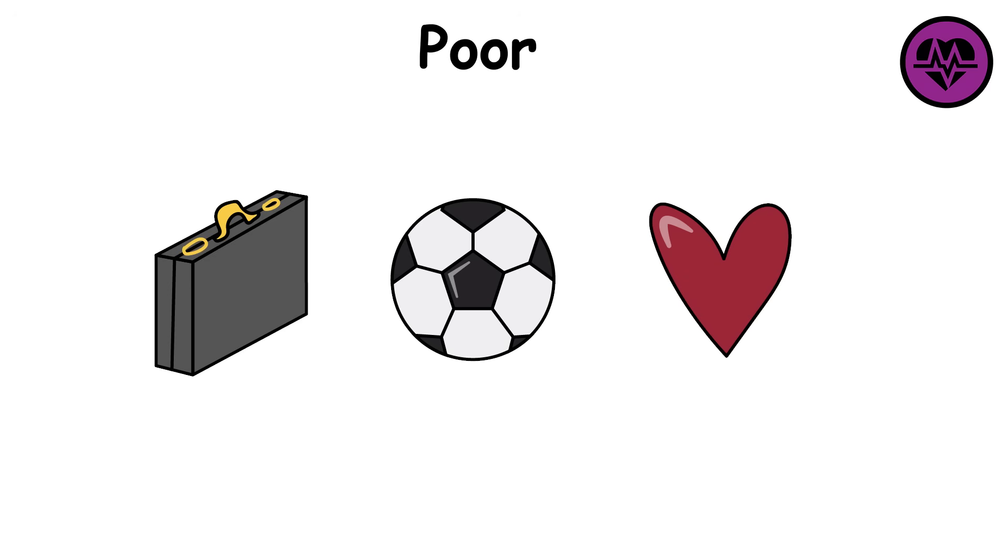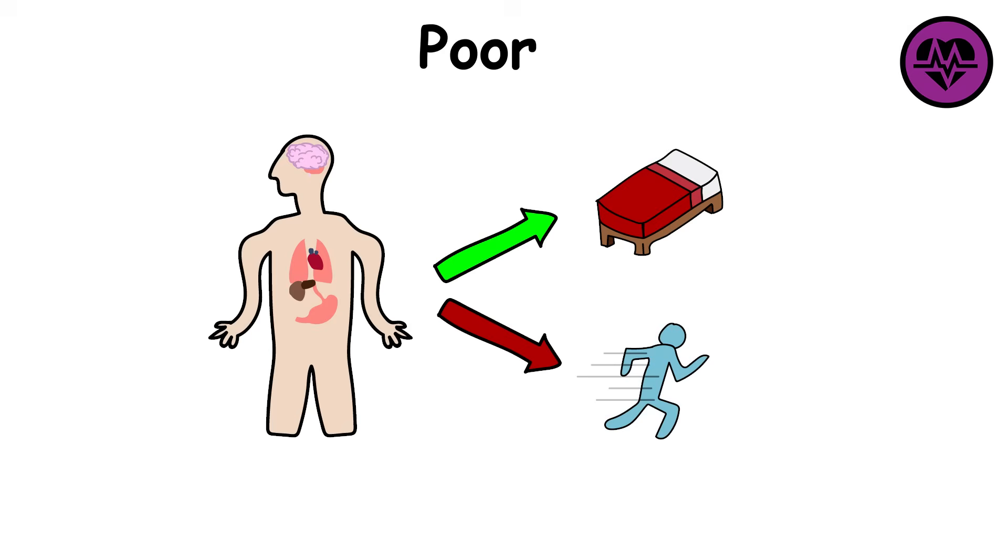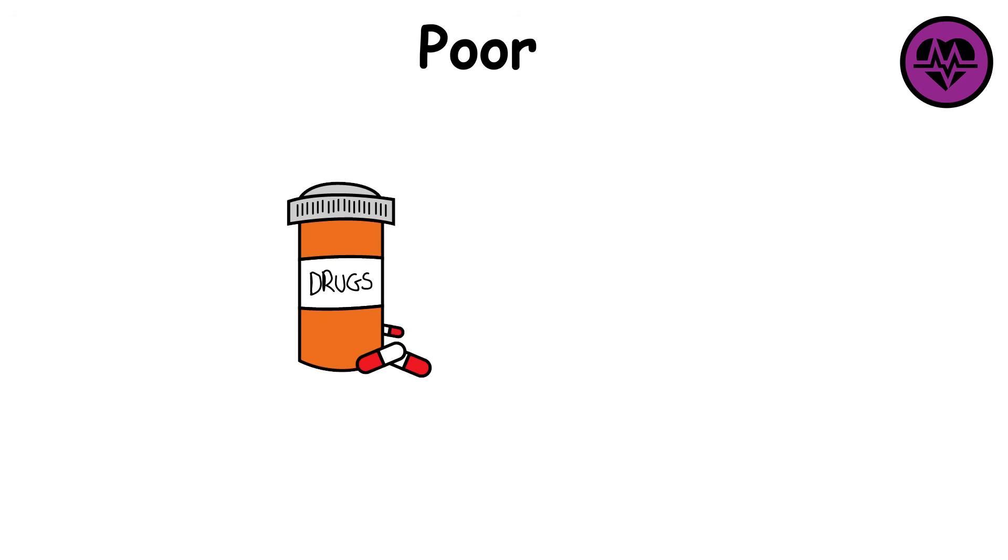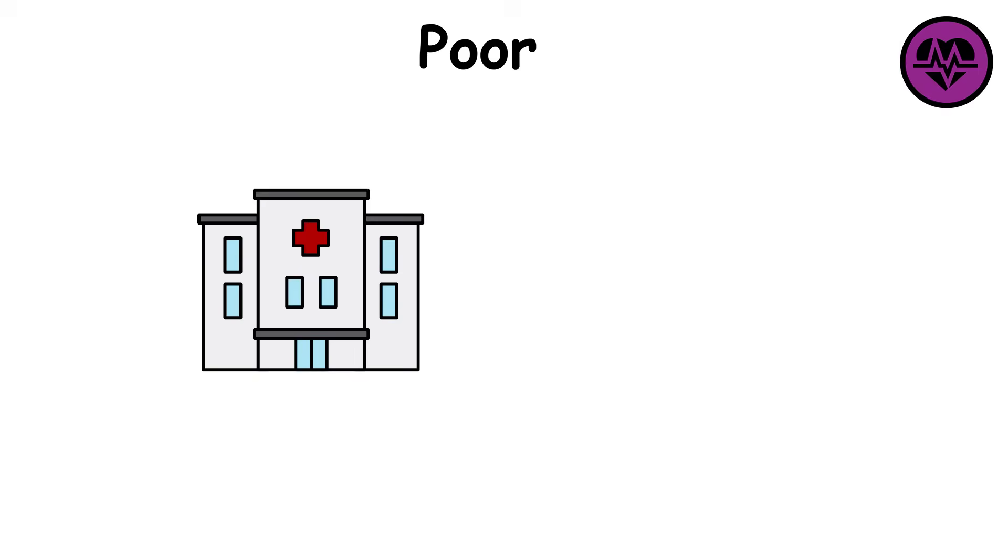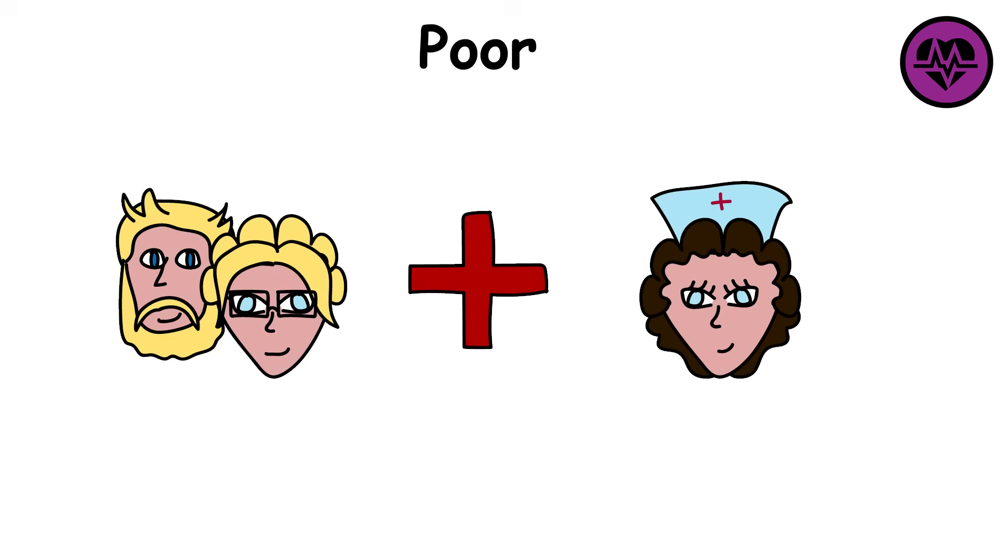Work, hobbies, and relationships often suffer as the body demands more rest than action. Doctors may prescribe multiple medications just to manage symptoms, while hospital visits become routine. Some people in poor health can live at home, but only with help from family or caregivers.